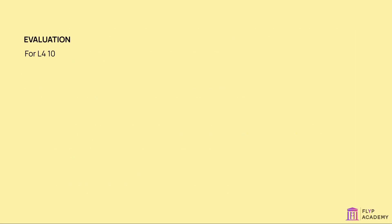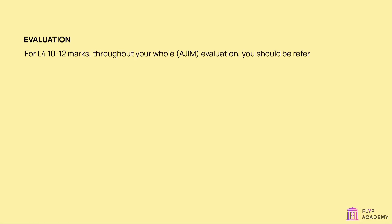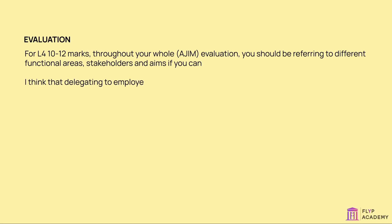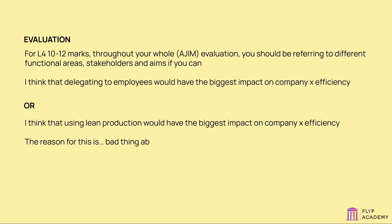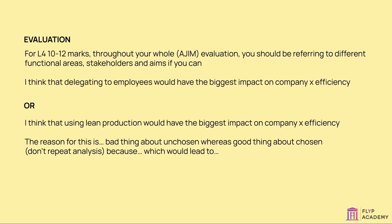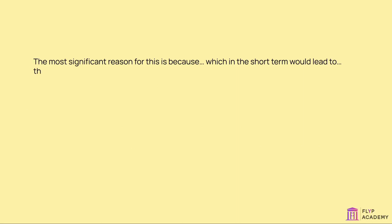Evaluation – for L4 (10 to 12 marks): Throughout your whole answer, you should be referring to different functional areas, stakeholders, and aims if you can. For example: 'I think that delegating to employees would have the biggest impact on company X efficiency.' Or: 'I think that using lean production would have the biggest impact on company X efficiency.' The reason for this is… Bad thing about unchosen option… Whereas… Good thing about chosen option – don't repeat analysis… Because… Which would lead to… Therefore… It depends on… Because… Which would lead to… Therefore… The most significant reason for this is… Because… Which in the short term would lead to… Therefore… In the long term…